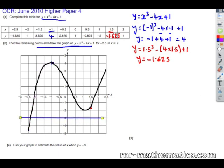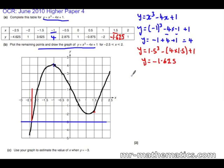And the two lines intersect at about approximately negative 2.4. So for part c, when y equals negative 3, x is approximately negative 2.4.